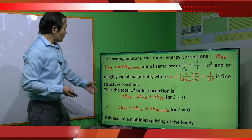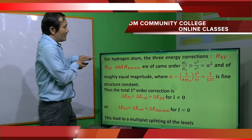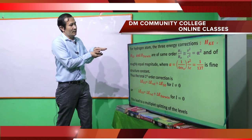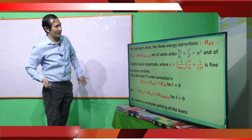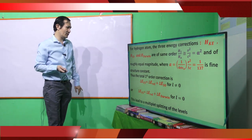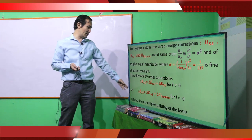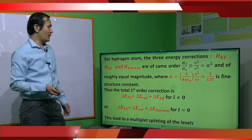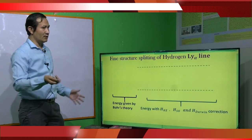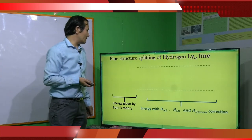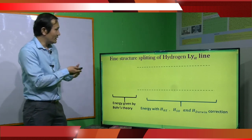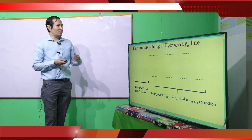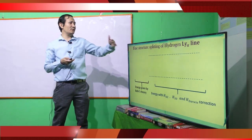Because of this correction, an initial energy level, when the correction is made, splits into a number of levels. This multiple splitting of energy levels is how we understand fine structure. I will explain this by taking the simplest example: the hydrogen-alpha line. Fine structure occurs in the hydrogen-alpha line.